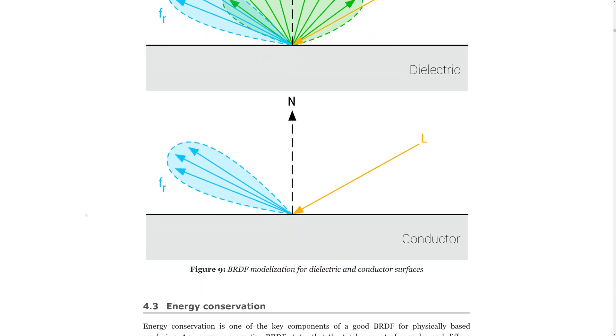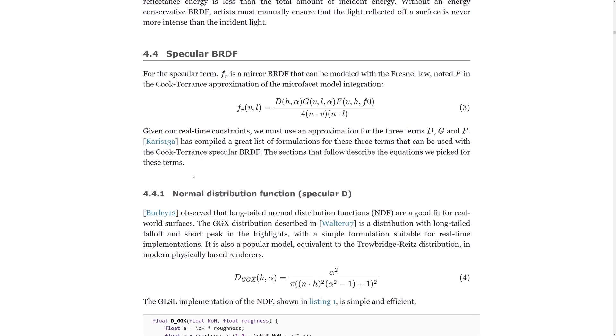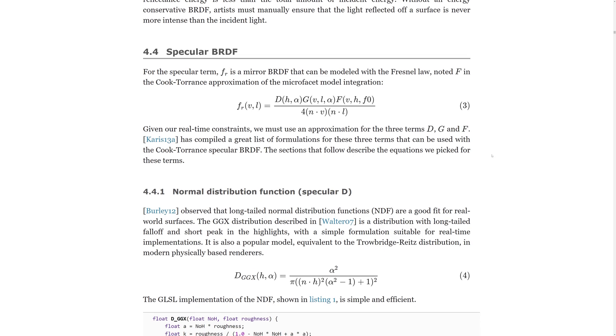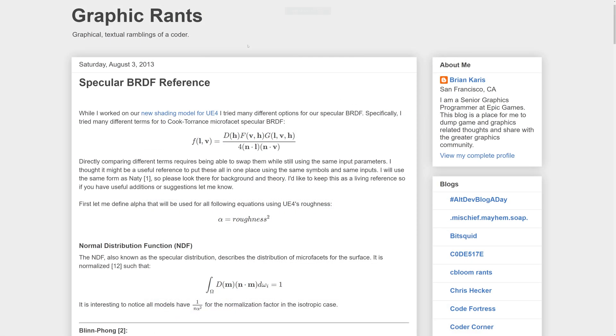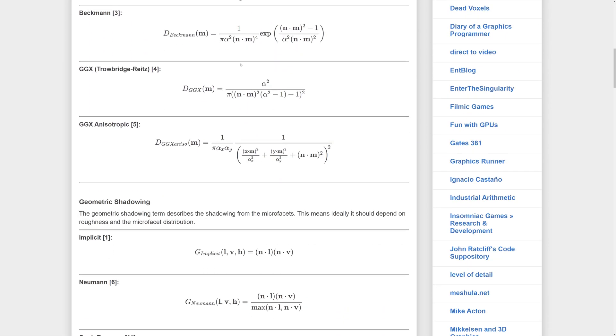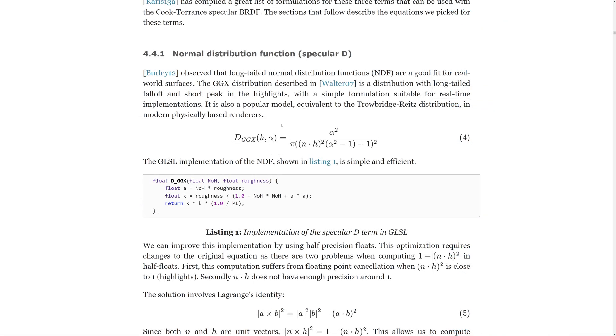Now let's have a look at how we can compute the reflected light starting with the specular part. The specular BRDF can be approximated using the Cook-Torrance function and as we see here it's a multiplication of terms, two of which we already discussed. D is the micro-facet normal distribution function and G is the geometric masking shadowing function. F is the Fresnel function which we'll look at in a bit.